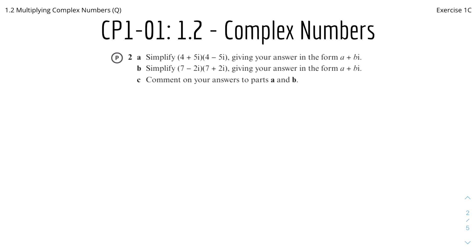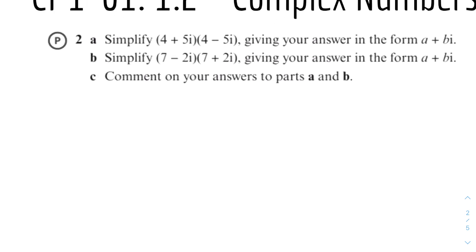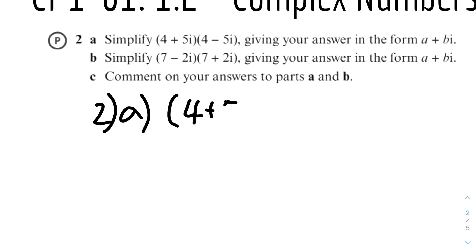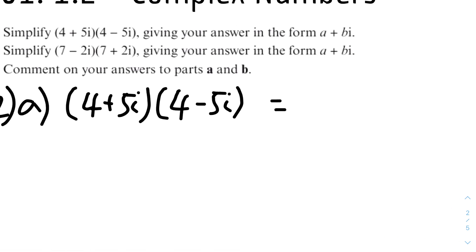Question 2, part A: simplify (4 + 5i)(4 − 5i) in the form a + bi. We can see that it's a difference of two squares. So we can use the FOIL method to expand the brackets. The first term will be 4 times 4, which is 16.